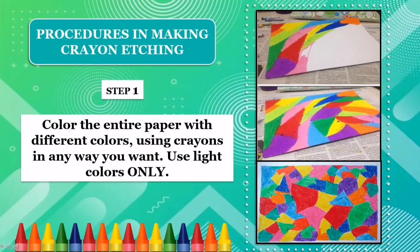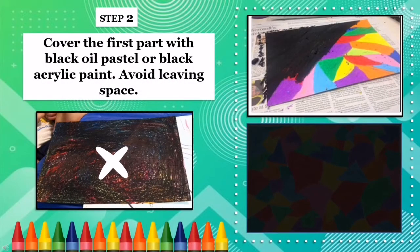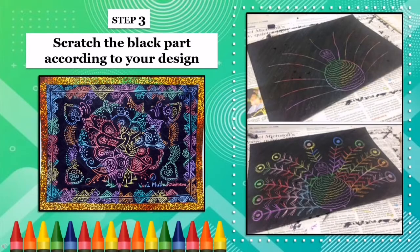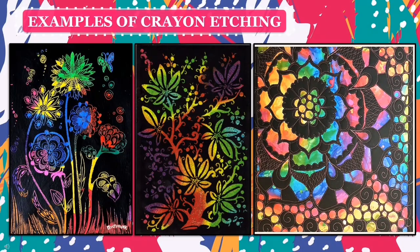Now, let us learn the procedures in making crayon etching. Step one: color the entire paper with different colors using crayons in any way you want. Use light colors only. See the example. Step two: cover the first part with black oil pastel or black acrylic paint. Avoid leaving space. Step three: scratch the black part according to your design using the chopstick or popsicle stick. Here are the examples of crayon etching.